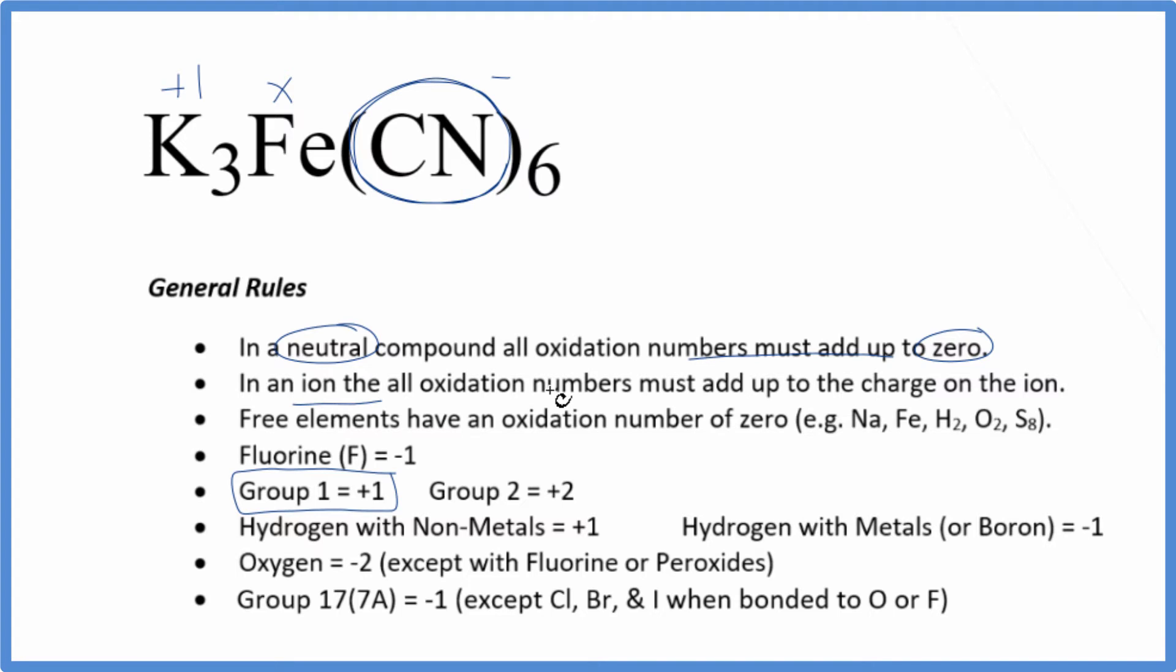When we have an ion, all the oxidation numbers are going to add up to the charge on the ion. So we know that the oxidation numbers for the carbon and the nitrogen, that's going to equal minus one.